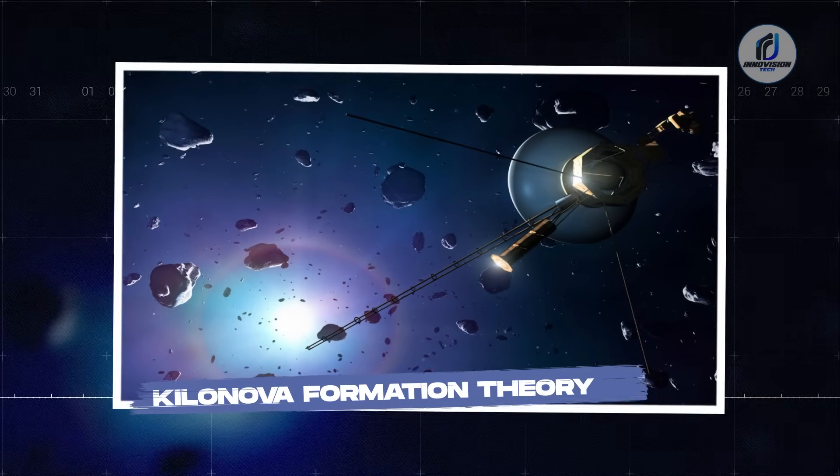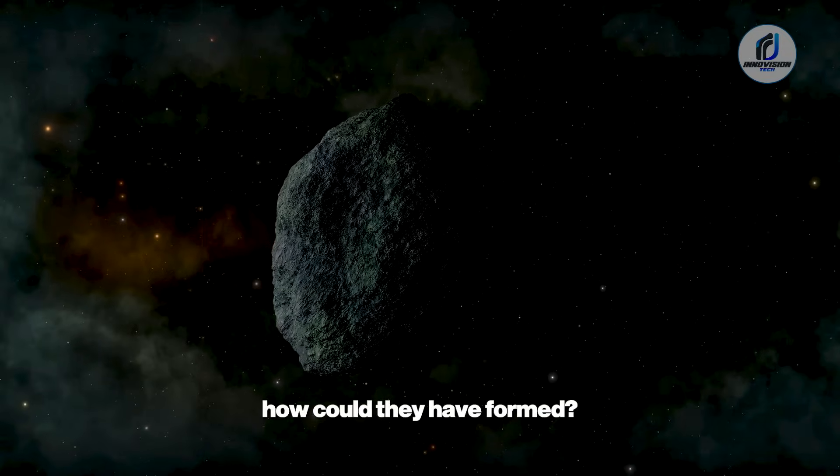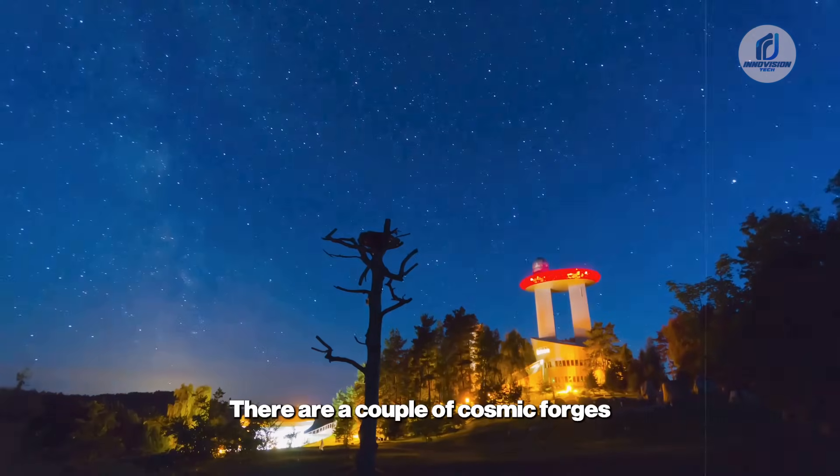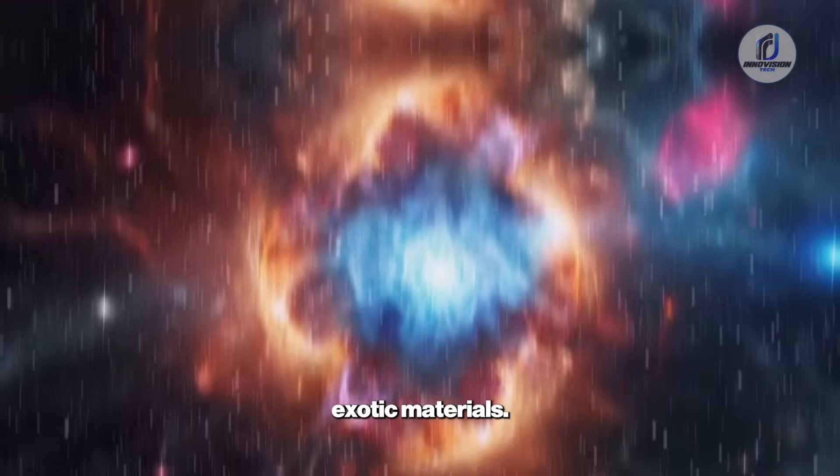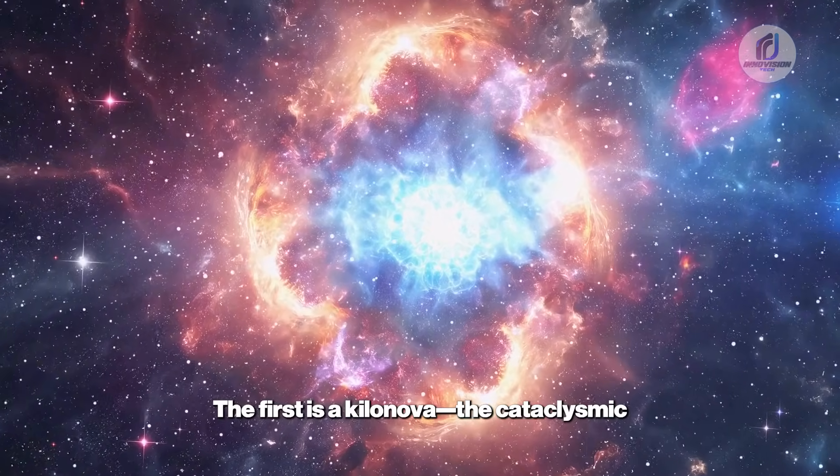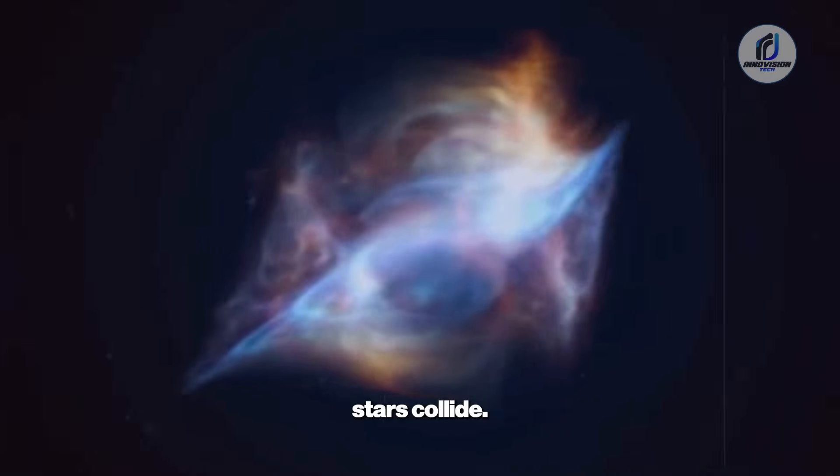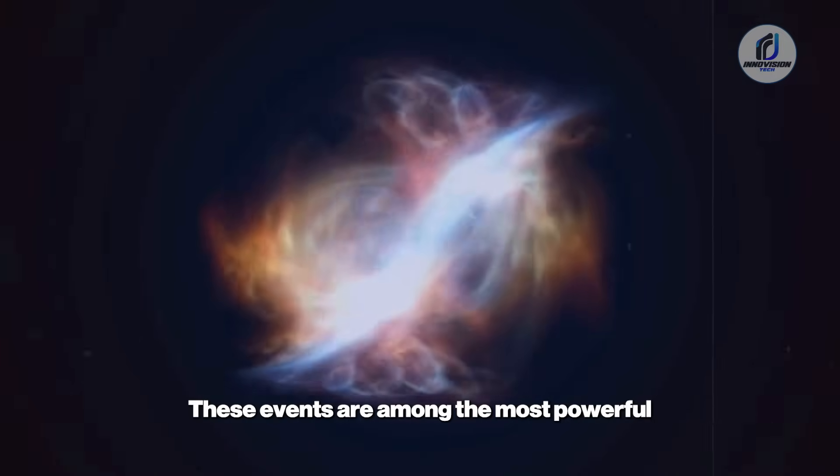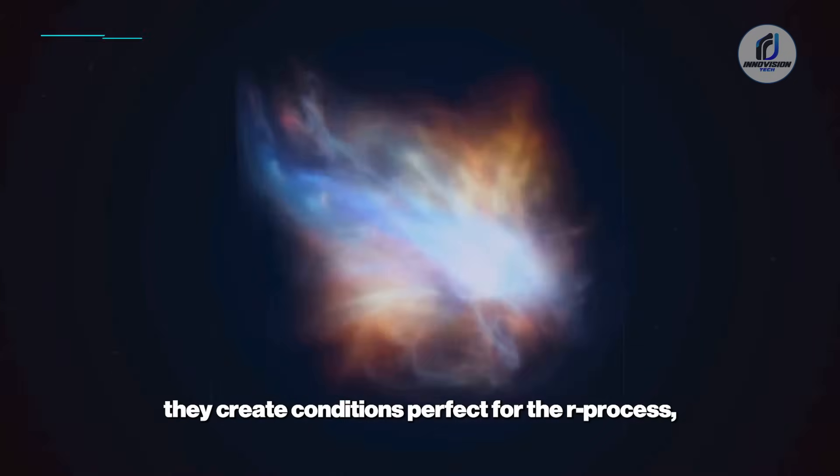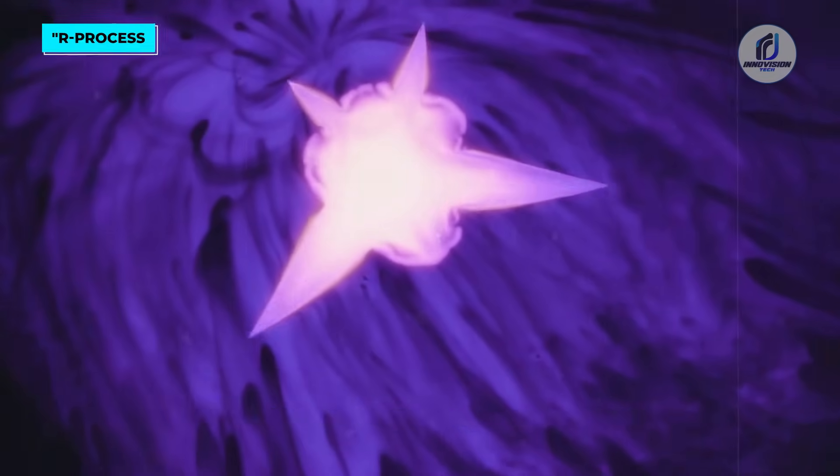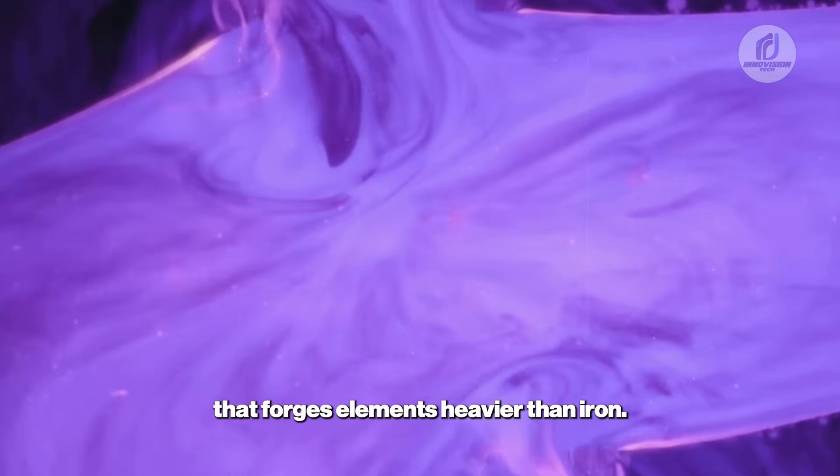Kilonova Formation Theory. So, if the metals on 3I Atlas are natural, how could they have formed? There are a couple of cosmic forges violent enough to potentially create such exotic materials. The first is a kilonova, the cataclysmic explosion that occurs when two neutron stars collide. These events are among the most powerful in the universe, and for a few brief seconds they create conditions perfect for the R process. A rapid-fire sequence of neutron captures that forges elements heavier than iron.